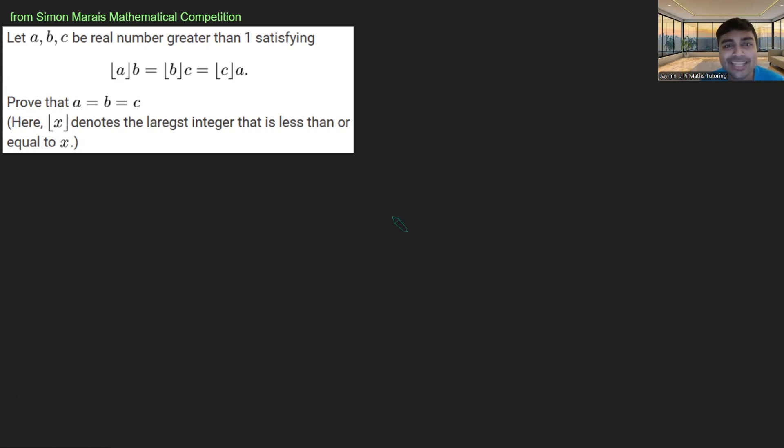A, B, and C are real numbers greater than one, satisfying floor(A) times B equals floor(B) times C equals floor(C) times A. We want to prove that A, B, and C are all the same.